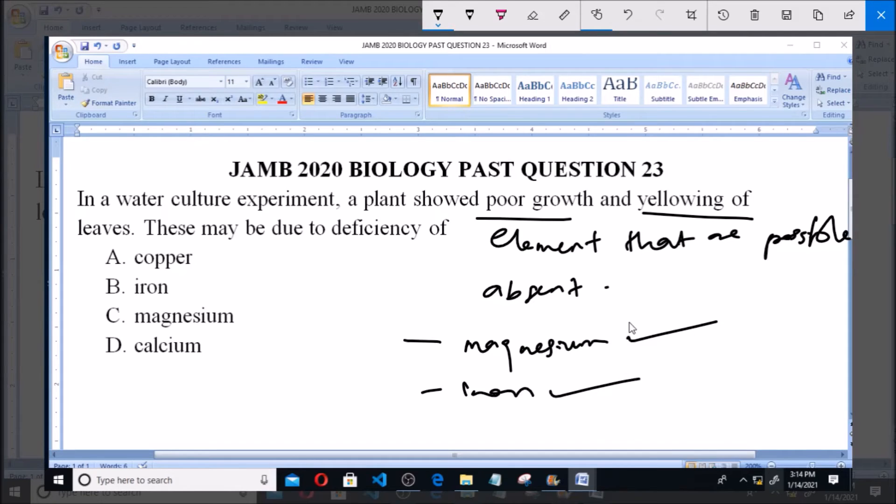Now copper is required for the absorption of iron by plants and copper also enables enhanced growth. Calcium, on the other hand, also enhances growth of plants.